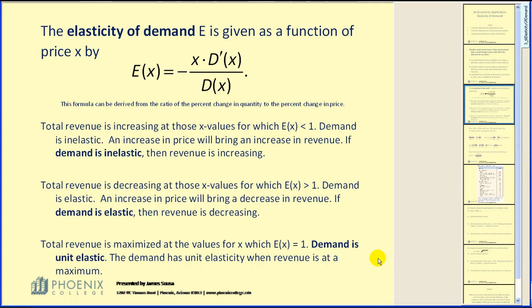Total revenue is maximized at the values for which E(x) equals one. Demand is unit elastic. The demand has unit elasticity when revenue is at a maximum.